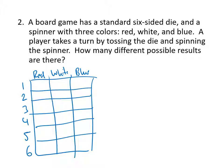Each entry in the table is a different result. For example, I could roll a three and spin red, or I could roll a five and spin white, or I could roll a two and spin blue. I can fill in this entire table with all these different combinations. This grid has six rows and three columns, which means it has six times three, which is 18 total entries. So that's how many different results we would get.